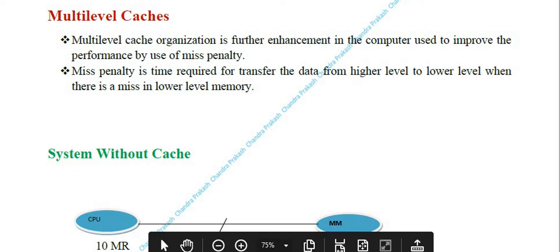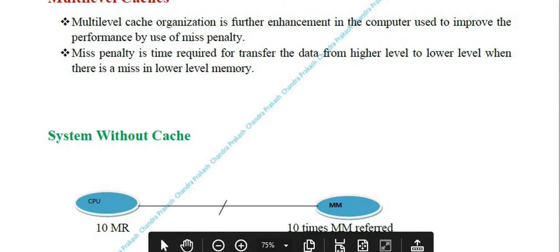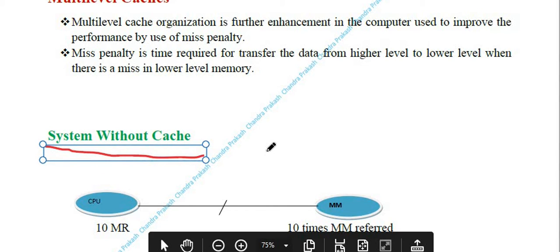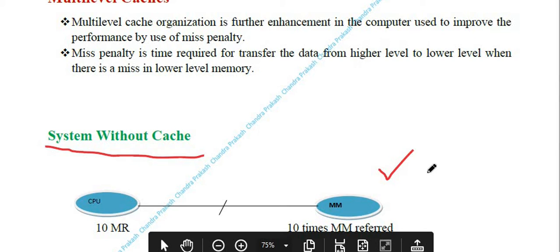First, consider a system without cache. If the CPU generates 10 memory requests, all 10 requests will be fulfilled by the main memory — meaning our main memory is accessed 10 times. The accessing time depends entirely on the main memory access time. System performance is fully dependent on the speed of main memory (RAM). To enhance the system, we need cache memory.